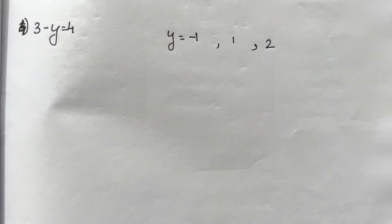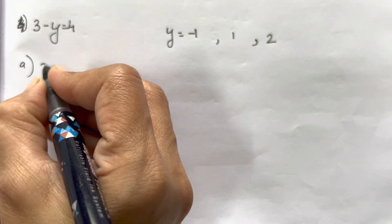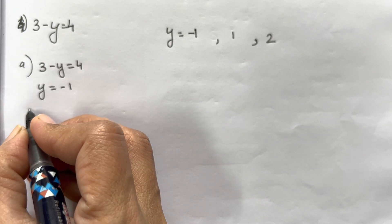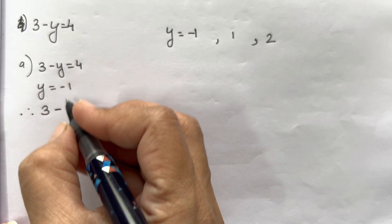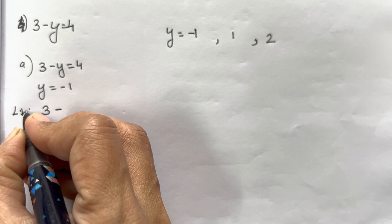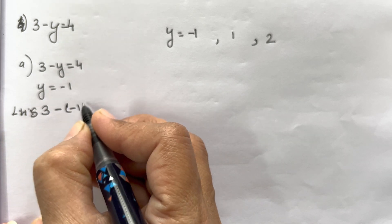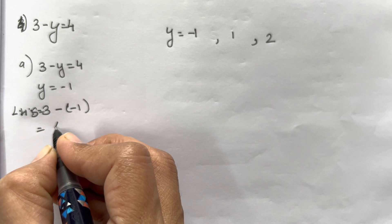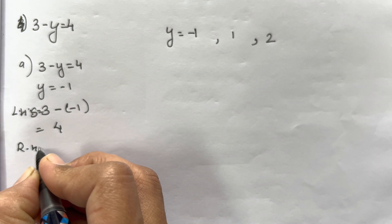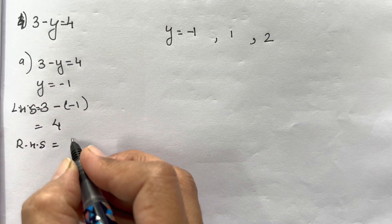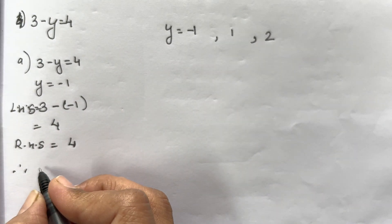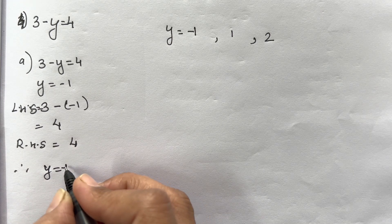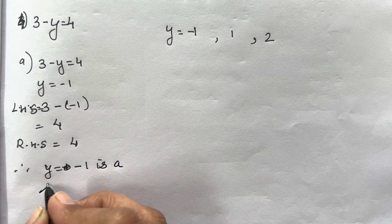Now let's move on to the fourth sum: 3 - y = 4 with y = -1. Taking Left Hand Side: 3 - (-1) = 3 + 1 = 4. Right Hand Side is 4. Since both are equal, therefore y = -1 is a solution.